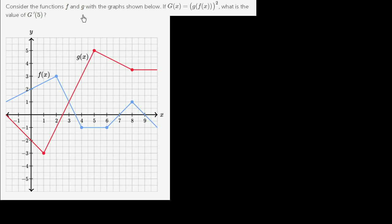Consider the functions f and g with the graph shown below. If capital G of x is equal to g of f of x, the whole thing squared, what is the value of capital G prime of 5? I encourage you to pause this video and try to solve it on your own.